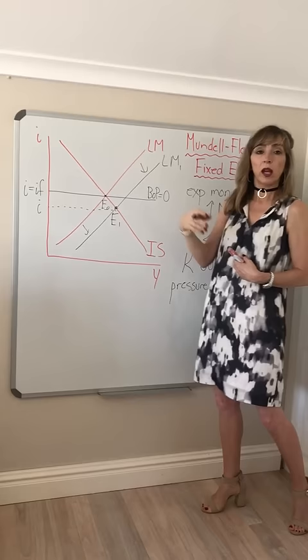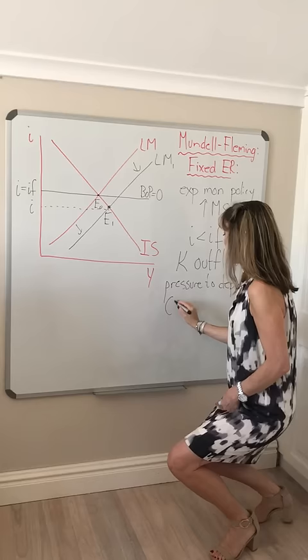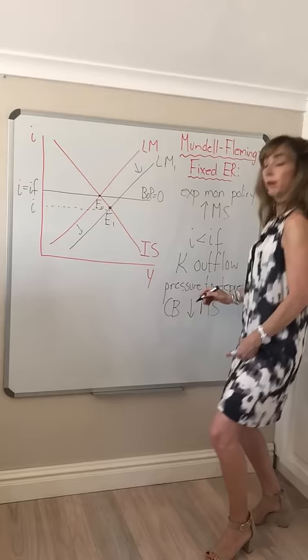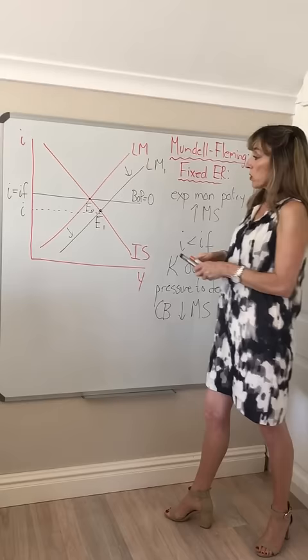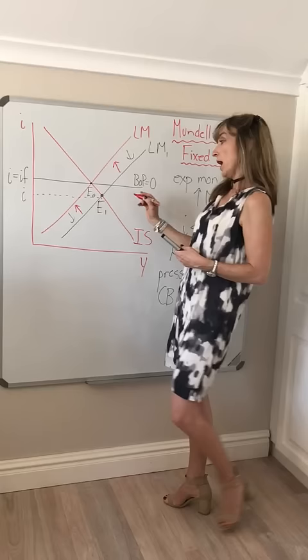So the central bank has to stand ready to preserve that peg. It's going to have to decrease the domestic money supply — taking the money people don't want in exchange for foreign money — and that's just going to cause a reversal of that initial increase. So our LM curve is now going to start shifting back to the left.